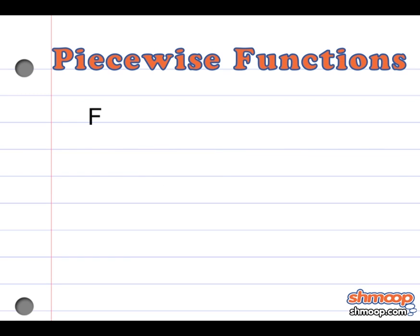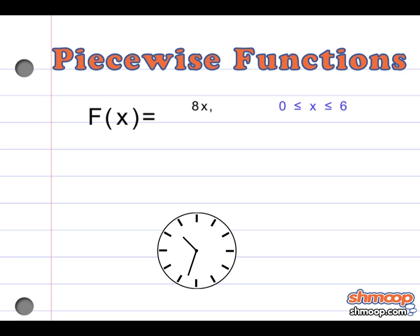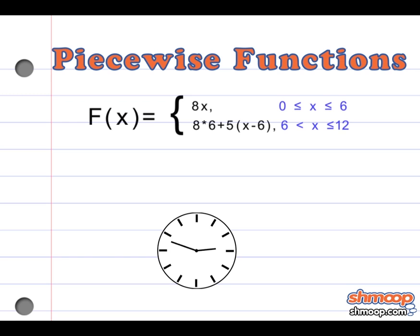f(x) = 8x, when x is greater than or equal to 0 and less than or equal to 6, since John works from 6 a.m. till noon. And 8 times 6 — that's John's $48 from his shift — plus 5 times (x minus 6), when x is greater than 6 and less than or equal to 12, since the stand closes at 6 p.m., 12 hours after 6 a.m.